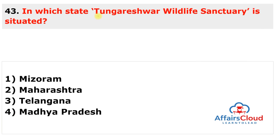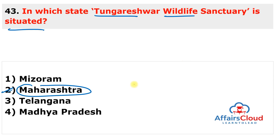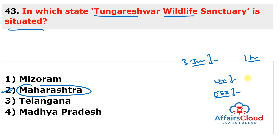Question 43: In which state is Tungareshwar Wildlife Sanctuary situated? The answer is Maharashtra. The Supreme Court exempted Maharashtra's Tungareshwar Wildlife Sanctuary from its 3rd June order mandating a 1 km eco-sensitive zone (ESZ) around all protected areas, stating that practical difficulties and ground realities must be considered before imposing a uniform ESZ order.